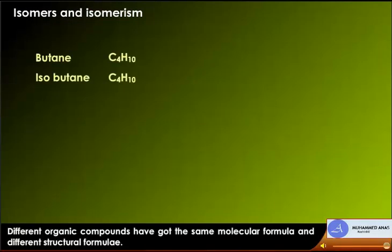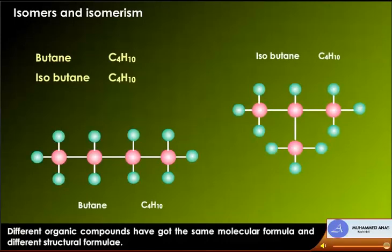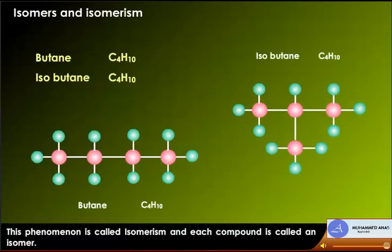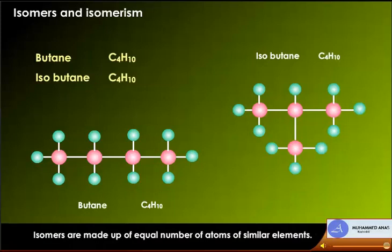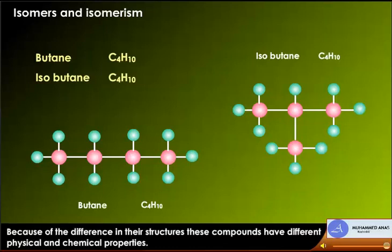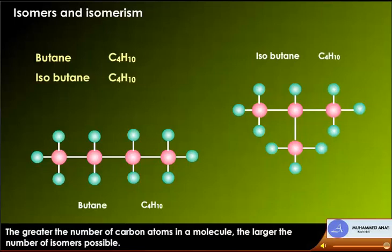Isomers and isomerism: different organic compounds having the same molecular formula but different structural formulae exhibit isomerism, and each compound is called an isomer. Isomers are made up of equal numbers of atoms of similar elements. Because of differences in their structures, these compounds have different physical and chemical properties. The greater the number of carbon atoms in a molecule, the larger the number of isomers possible.